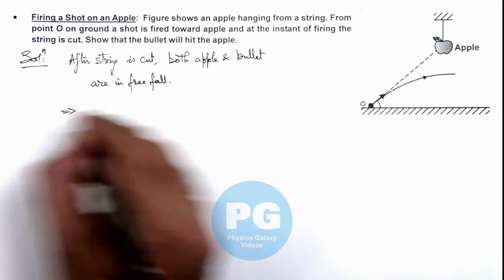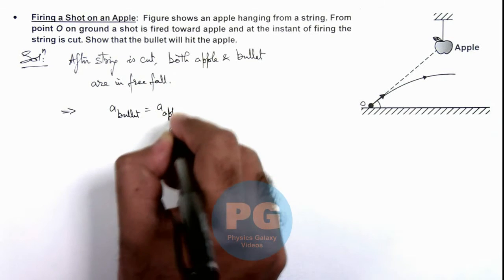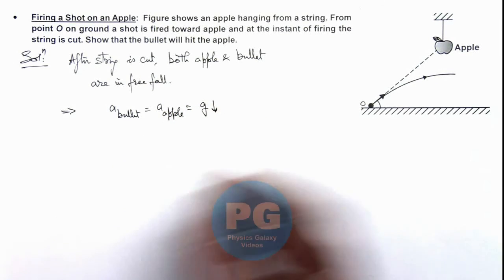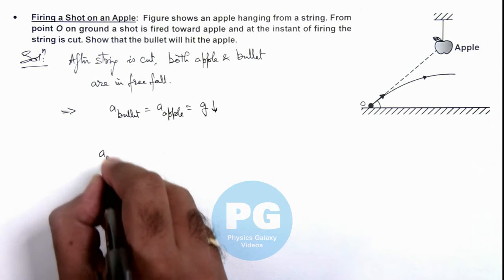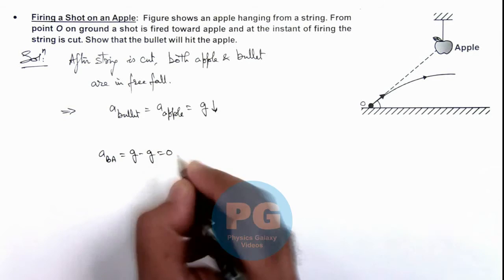This implies we can write acceleration of bullet equals acceleration of apple, which equals g in downward direction. So if we calculate the acceleration of bullet with respect to apple, this will be g minus g, that is equal to zero.